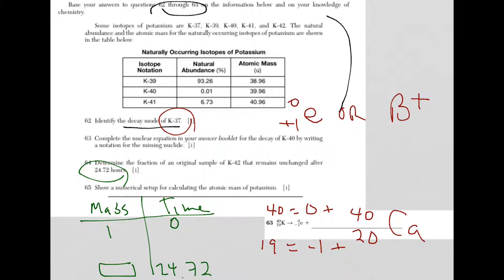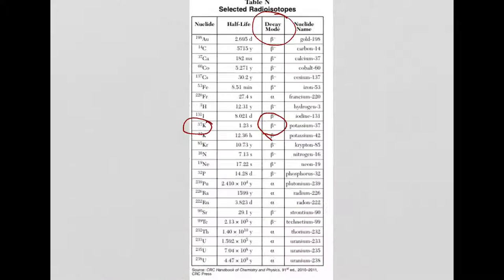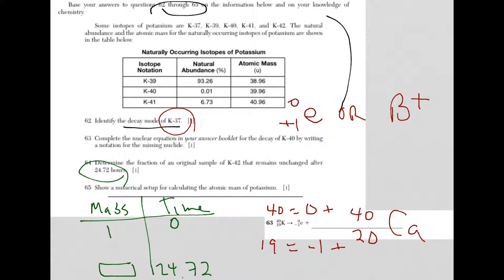How do I get from 0 to 24.72 hours? I need the half-life of potassium-42. I'm going back to that same table. And now I'm looking for potassium-42. And instead of decay mode, what am I looking for here? I'm looking for half-life. So it's right here. 12.36 hours. So if I go back, it's 12.36 hours is my half-life.